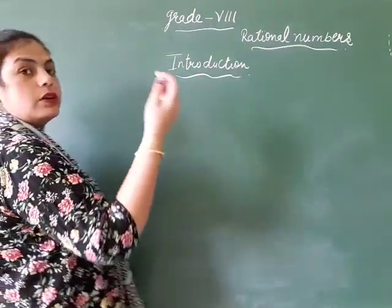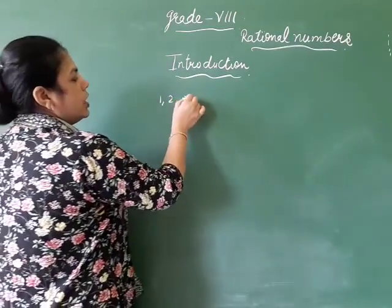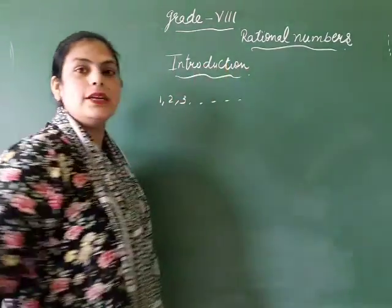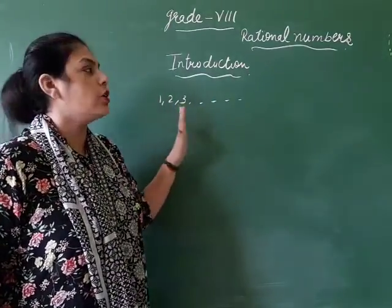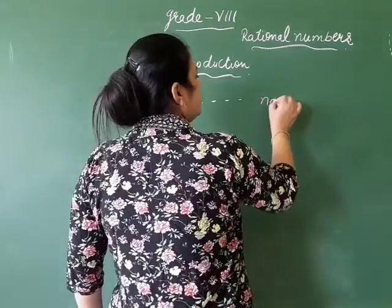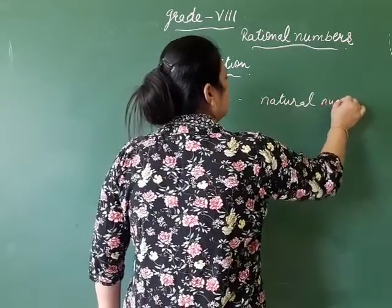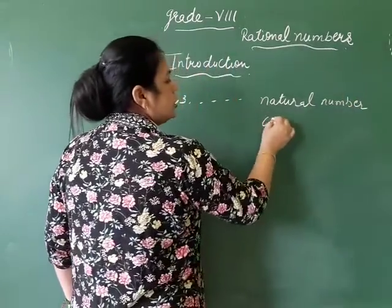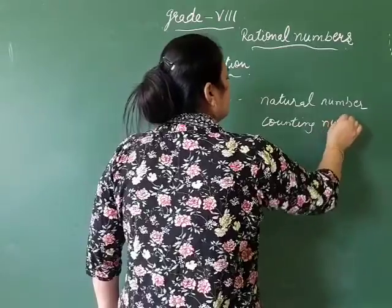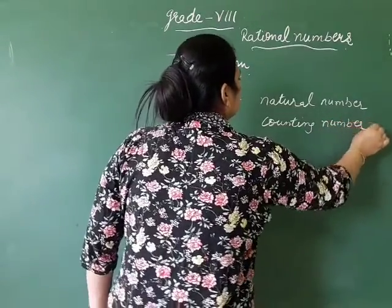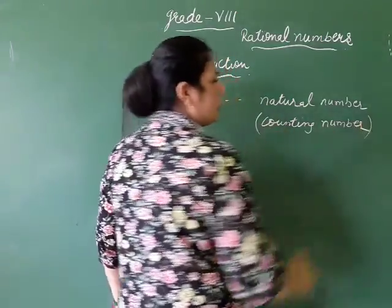Firstly, our counting starts from 1 — that is 1, 2, 3. You have known these numbers in earlier classes. The numbers starting from 1 are called natural numbers. They are also called counting numbers. The numbers that start from 1 are called natural numbers and also called counting numbers.